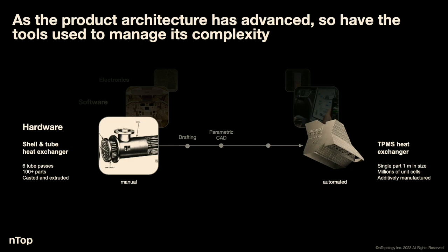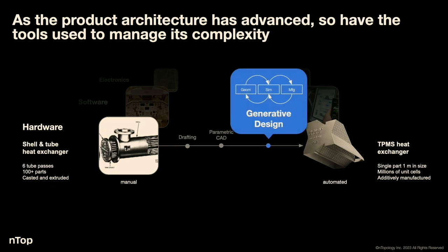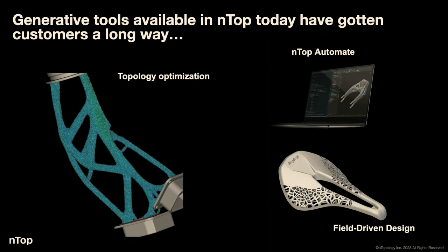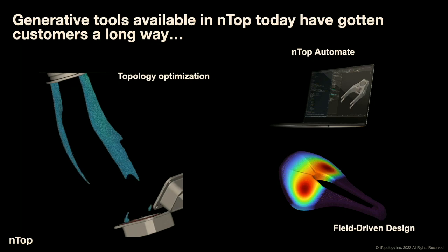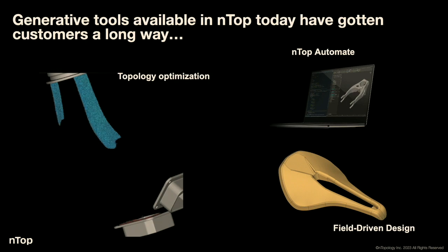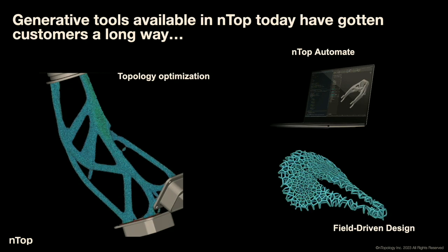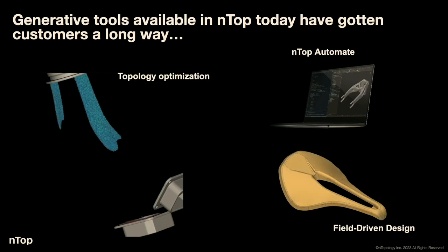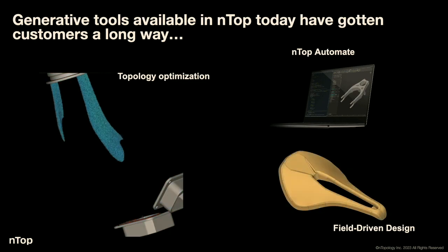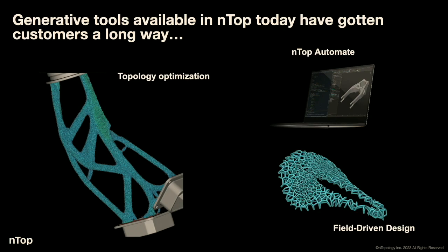The tools we offer today have gotten our customers pretty far. We have topology optimization, automation tools like ntop automate which can run command-line and execute a bunch of designs, sweep over parameters in a design space, and field-driven design to couple stress data — for example, for this bike seat — to inform how a lattice should perform, making it denser in high-stress areas and less dense in others. But as our customers have advanced in additive manufacturing, so has the complexity of their design problems.